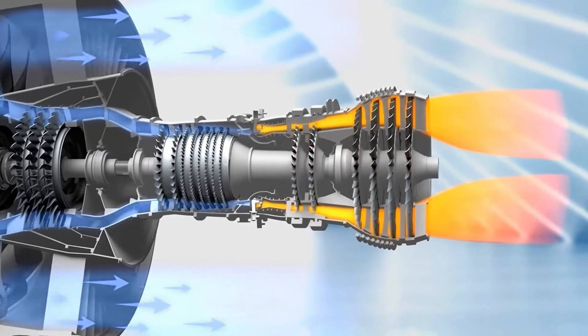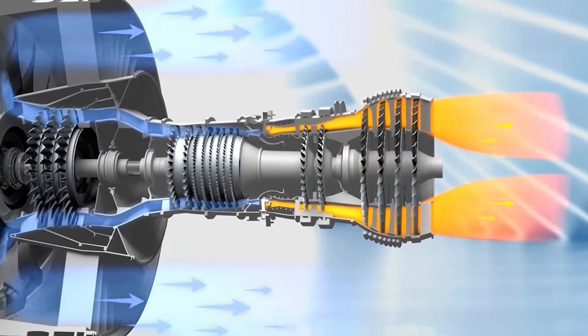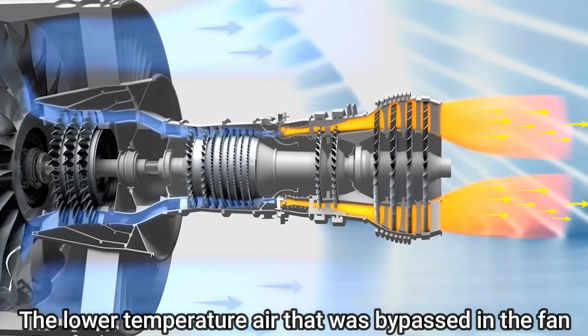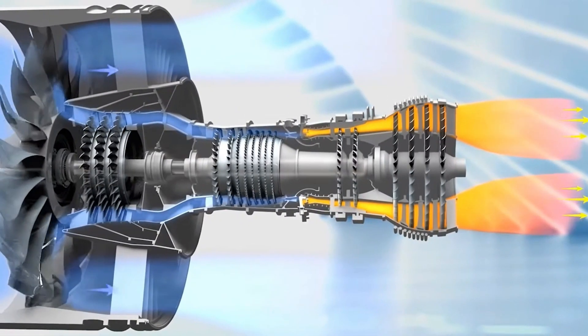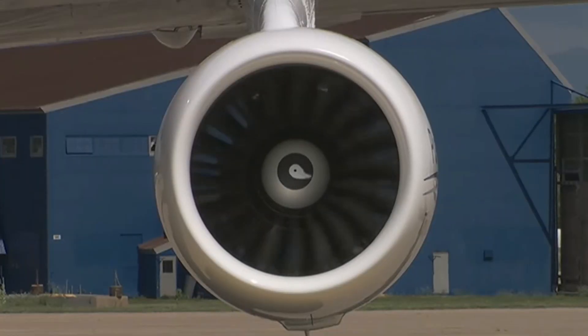The nozzle may be preceded by a mixer which combines the high temperature air coming from the engine core with the lower temperature air that was bypassed in the fan. The mixer helps to make the engine quieter. So, to simplify.